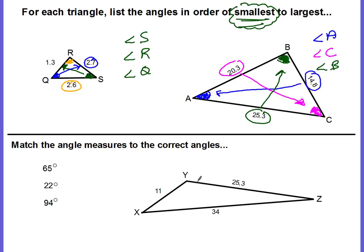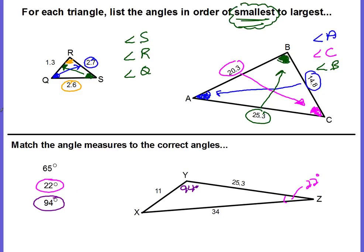Now we want to match the angle measures to the correct angles by writing them in the angles on the diagram. The largest angle is 94 degrees — the longest side is 35, and the angle opposite that is angle Y, so Y is 94 degrees. Write it in the angle itself, not on the side. The smallest is 22 degrees — the smallest side is 11, and the angle opposite is angle Z. Sometimes the angle is too small to write in, so just draw a little arrow. The middle angle, 65 degrees, is opposite 25.3, which is angle X.